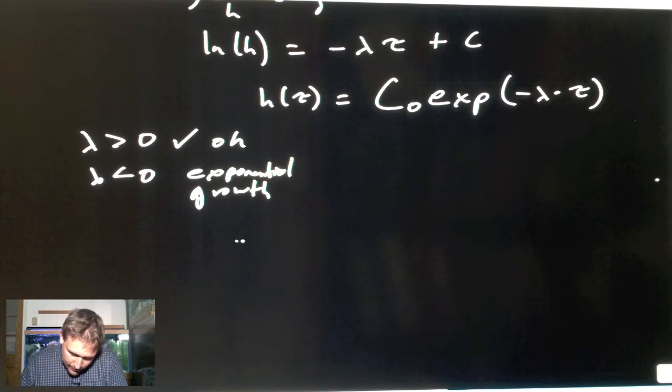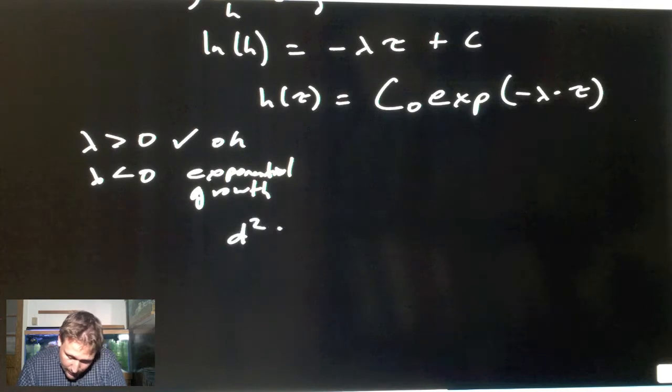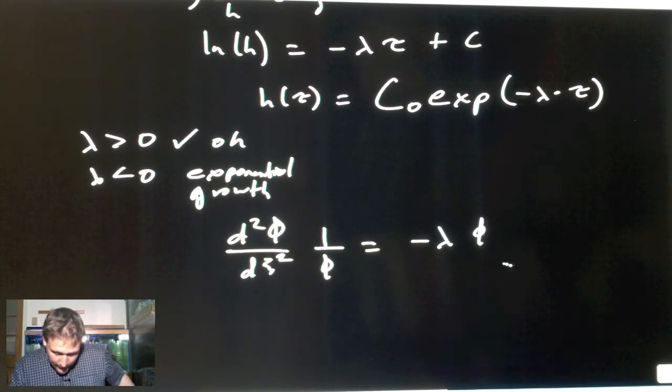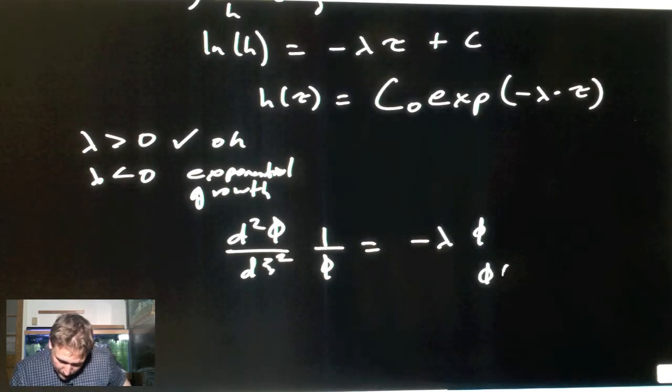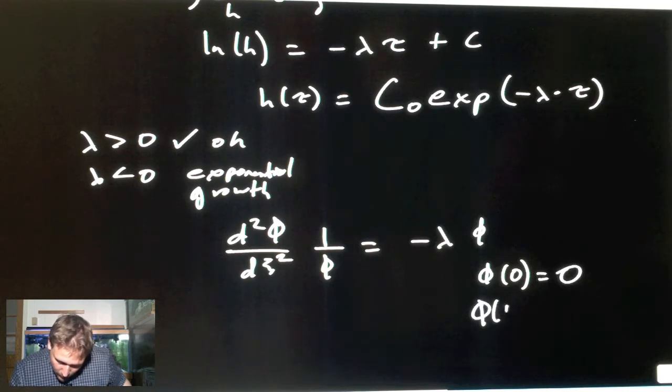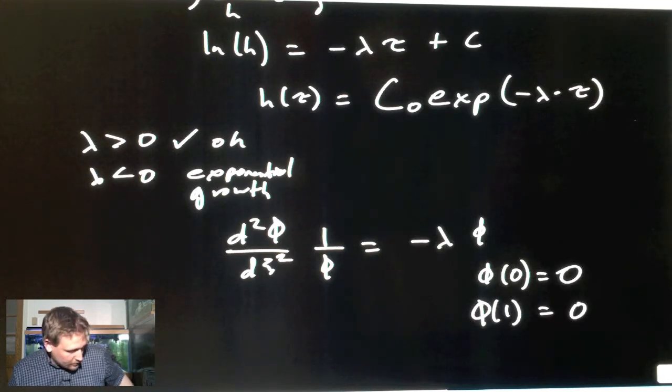Let's move on to the next part of the problem. This is the total derivative d²φ/dψ² times one over φ equals minus λ times φ. And then the boundary conditions after you substitute in here: φ at zero equals zero, φ at one is also equal to zero.